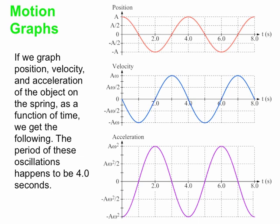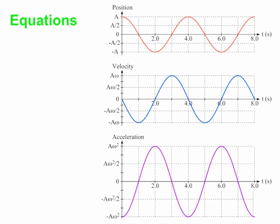Let's write some equations that match these graphs. For the top graph, the x position as a function of time is given by x equals A cosine omega t. Omega — we've called it angular velocity before — we're going to call it angular frequency in this particular case. This equation applies only when you let the object go from rest at x equals a at t equals zero. If you have different initial conditions, you've got to modify your equations appropriately.